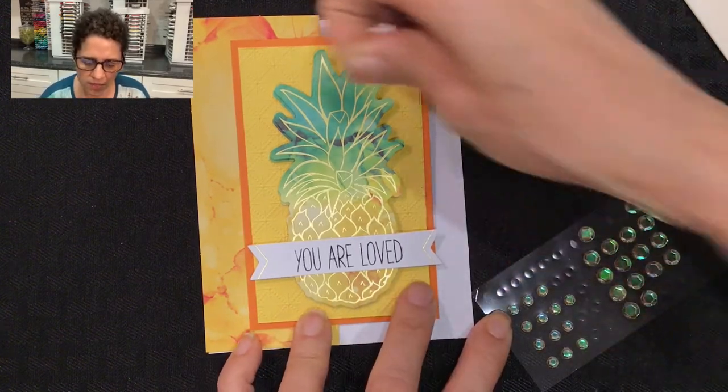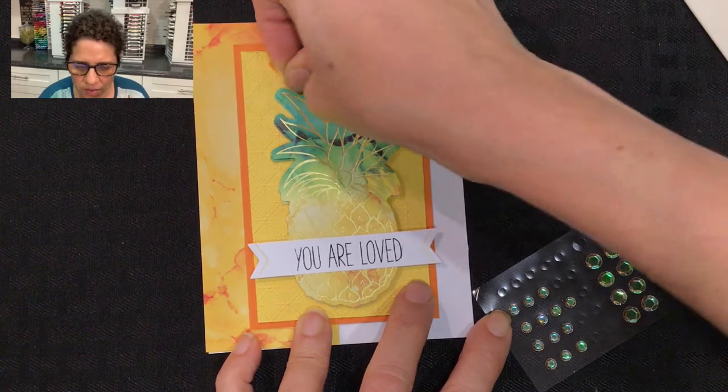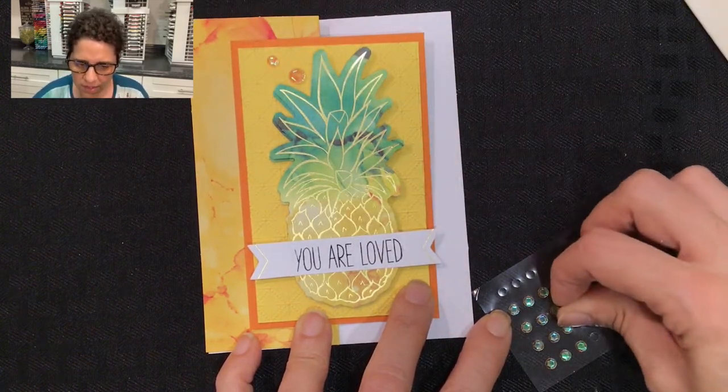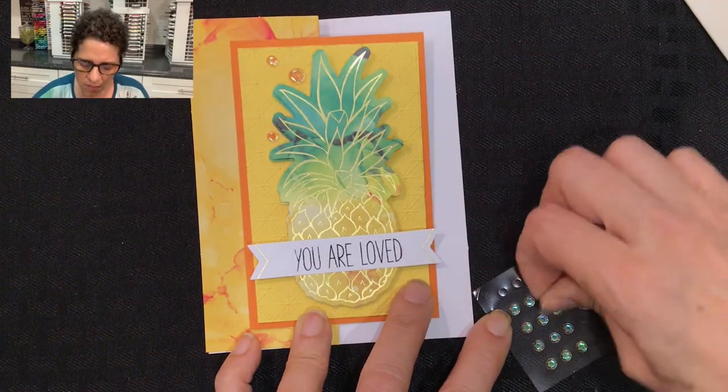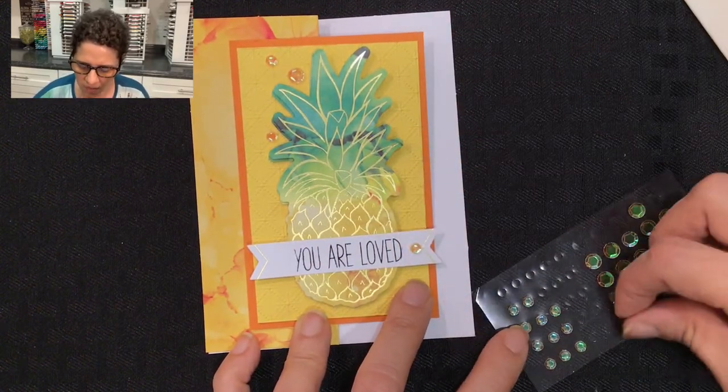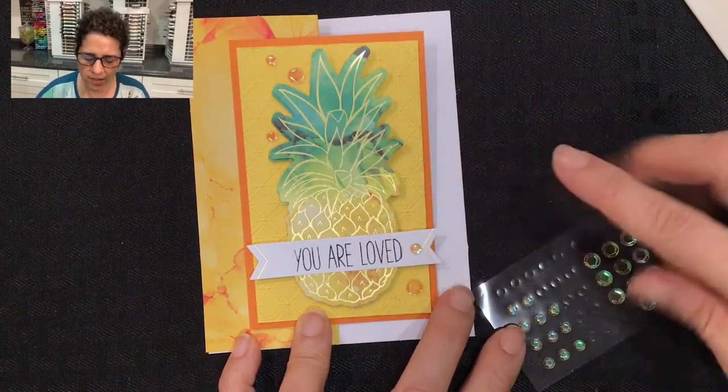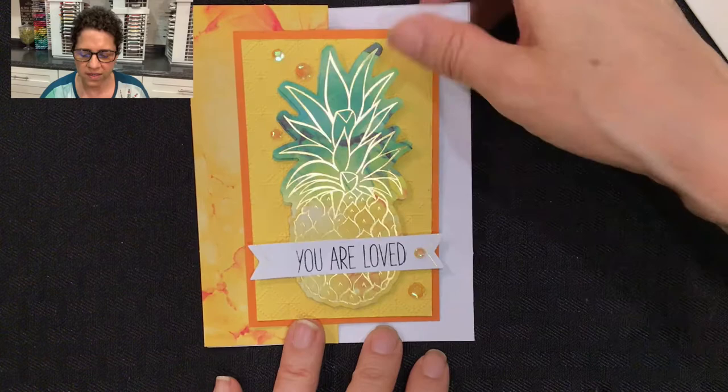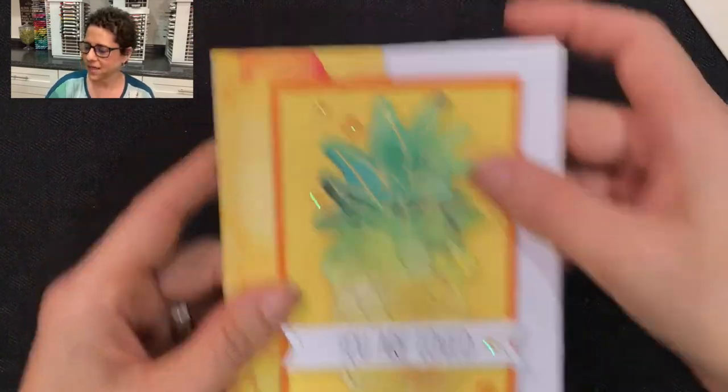The next thing we'll do is just add our embellishments. I'm going to use these really fun sequins. I'm going to put a small one there and then a larger one right there. I'll take a small one and put it right here, then another small one right there next to the sentiment. Then I'll take one more large one and cascade it all the way down from the top corner to the bottom. That is our pineapple alternative card number one. Let me move on to the next card.